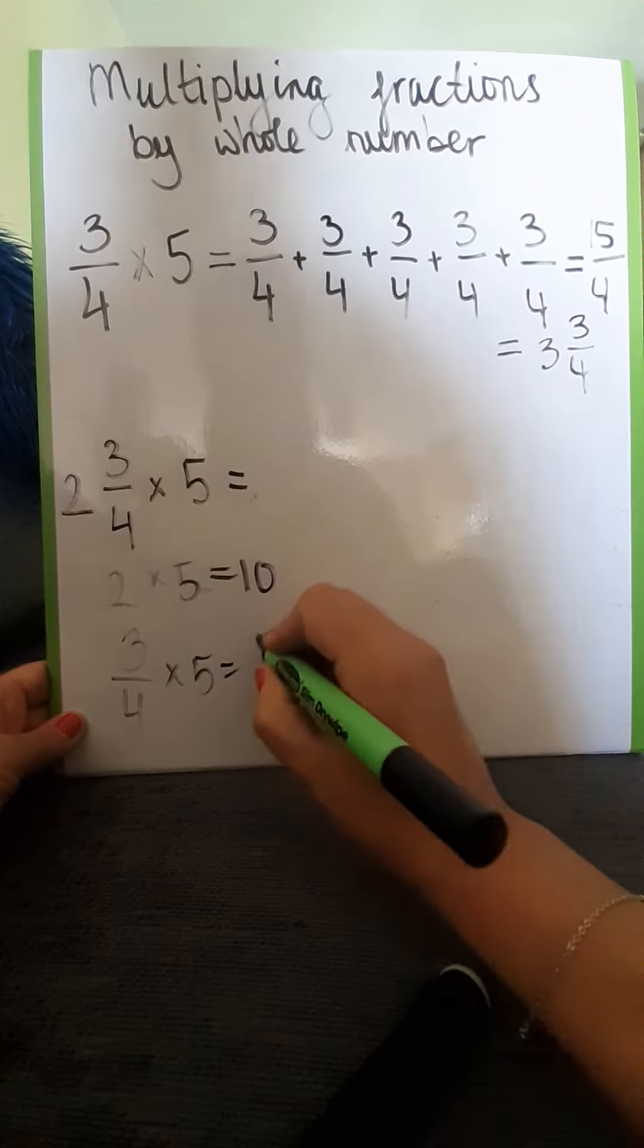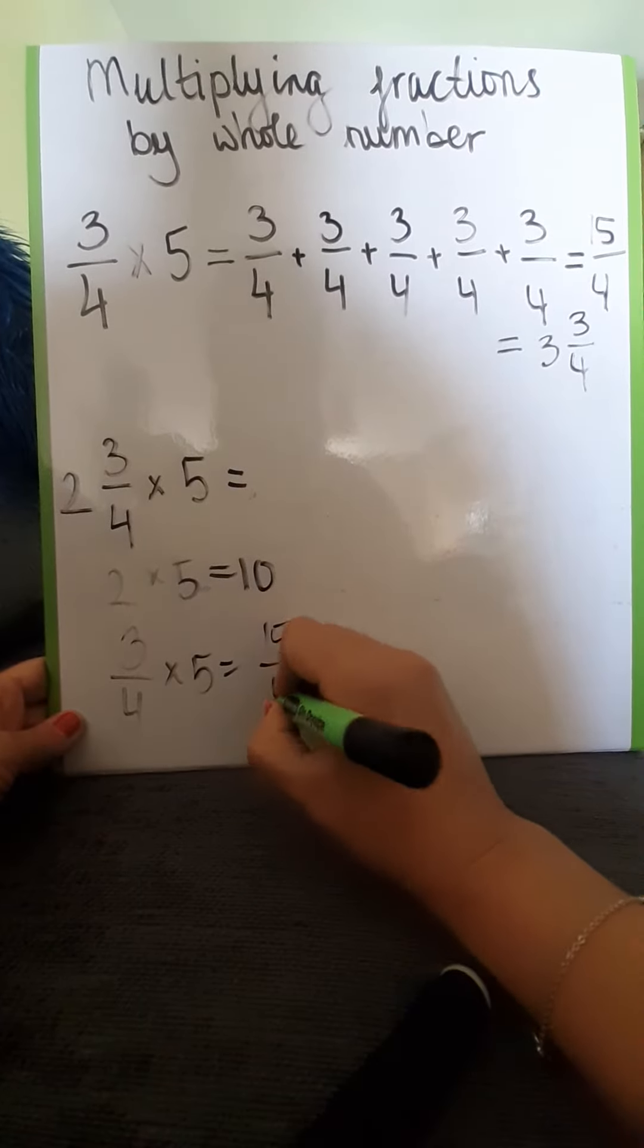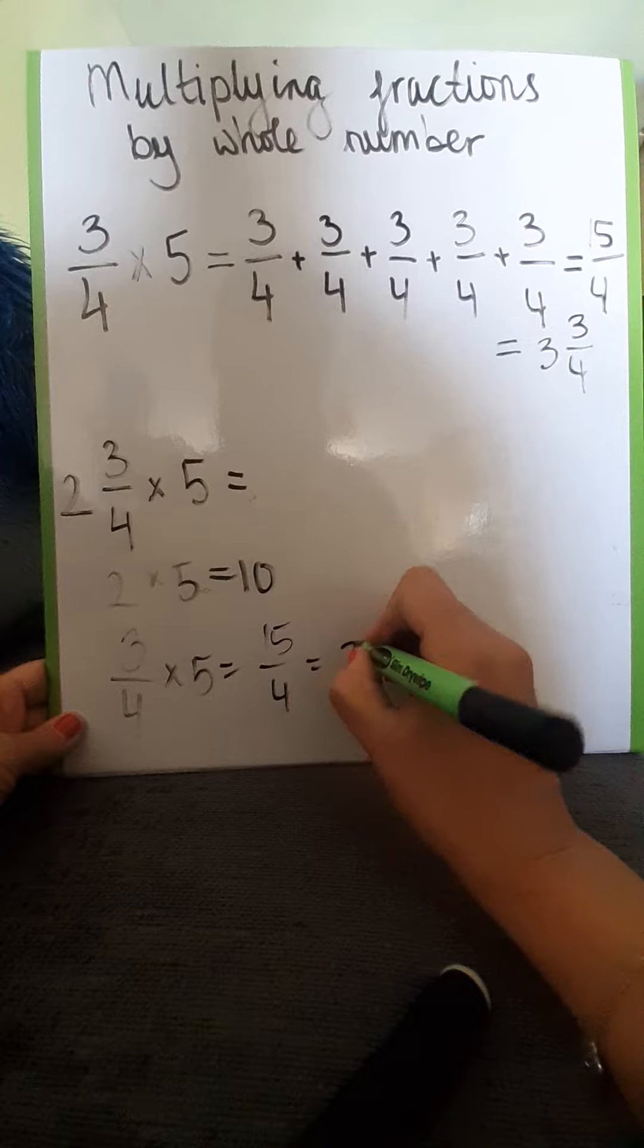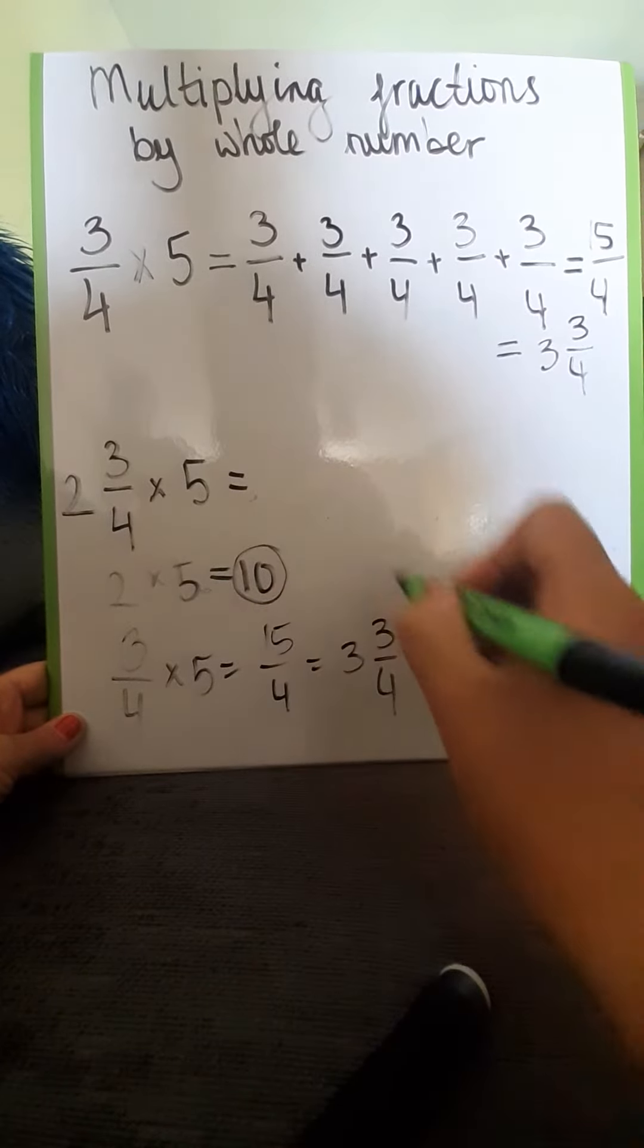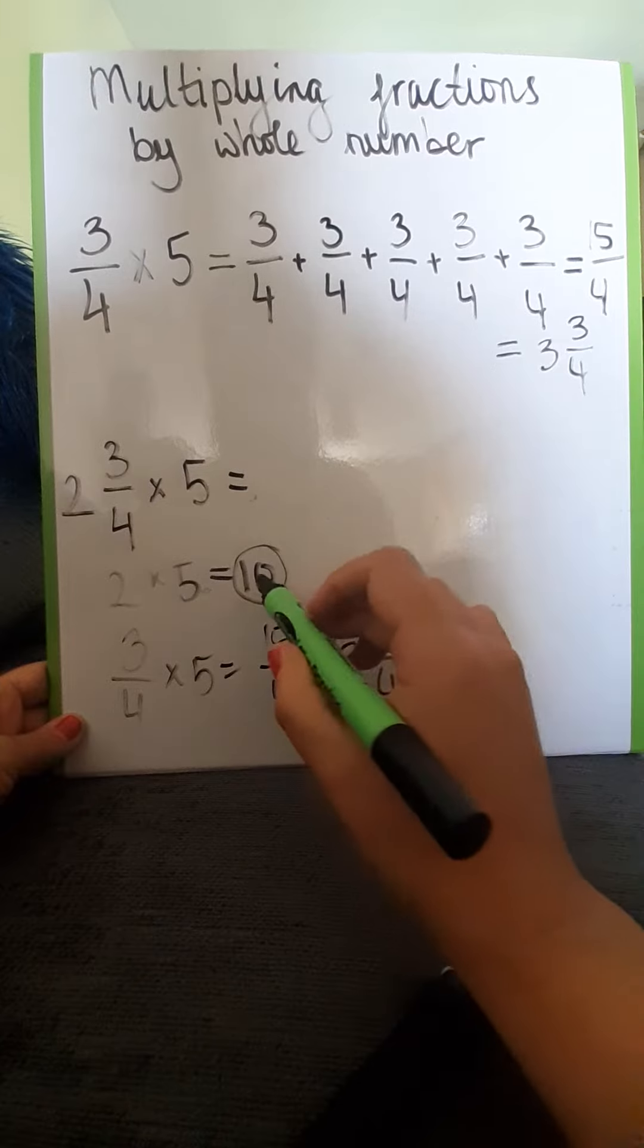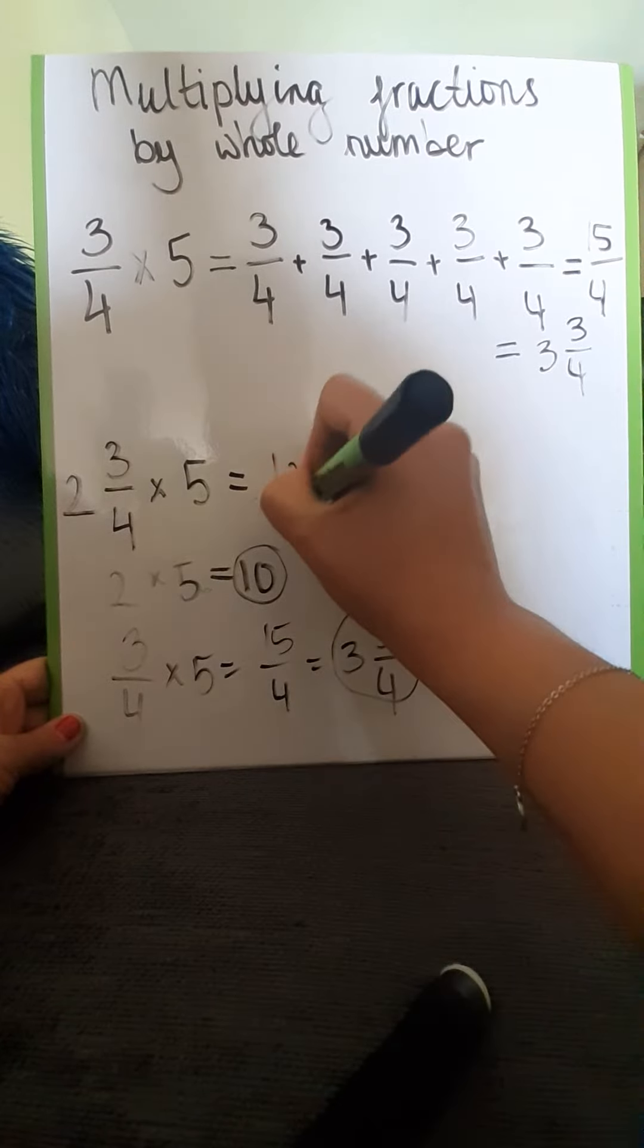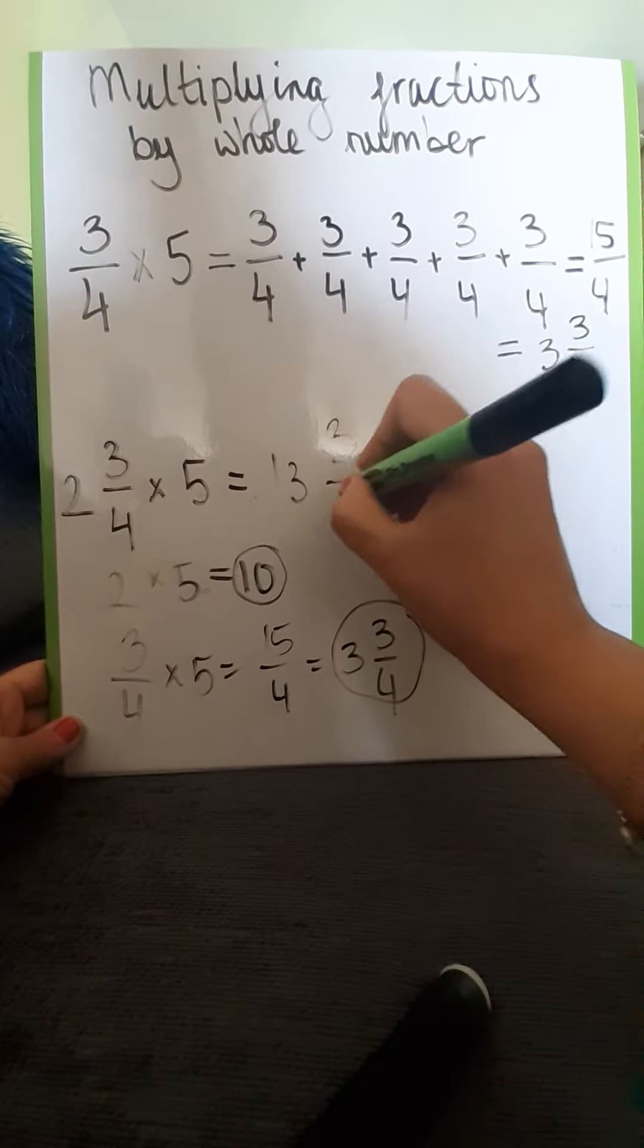And we already know that that was 15 quarters or 3 and 3 quarters. And then I just need to add my two outcomes together, so that's 10 and 3 is 13 and 3 quarters.